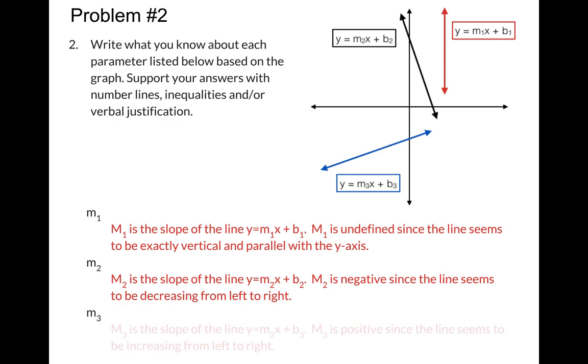Finally, m3 is also a slope. It's the slope of the third equation, the blue one, y equals m3x plus b3. And just like the black one was negative because it seems to be going downhill walking left to right, this one seems to be positive or increasing because it is moving from left to right we're going up or uphill.